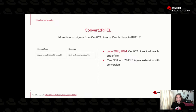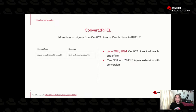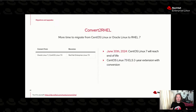For Convert to RHEL to work, you need to be on RHEL 7.9 and do an in-place conversion from CentOS Linux 7.9 to RHEL 7.9. As part of this offering — Red Hat Enterprise Linux support for third-party Linux distributions — this conversion subscription actually has that ELS two-year extension built in. That's the use case where you convert your systems from CentOS Linux to RHEL 7 so that you've got support for two years, and then work on moving those workloads onto something like RHEL 8.8 or 9.2.